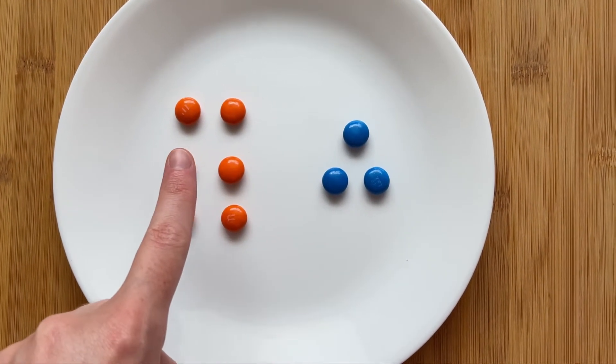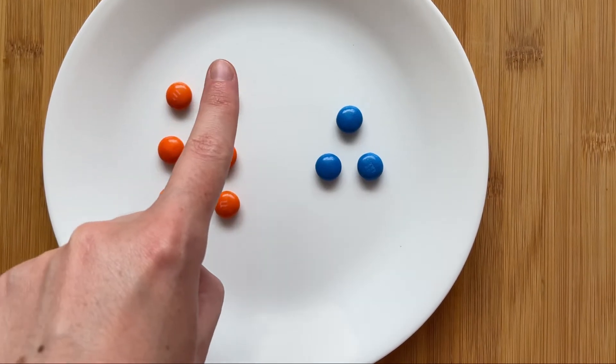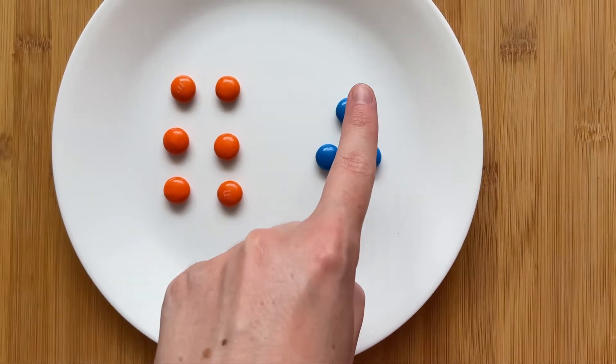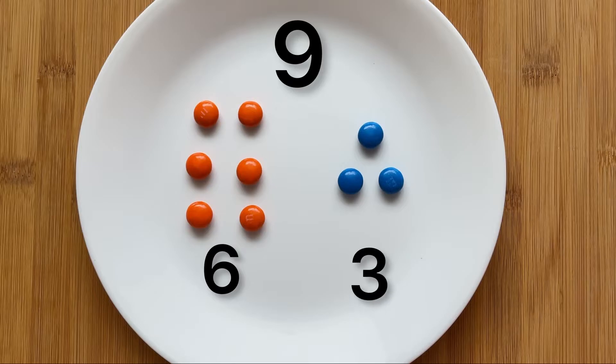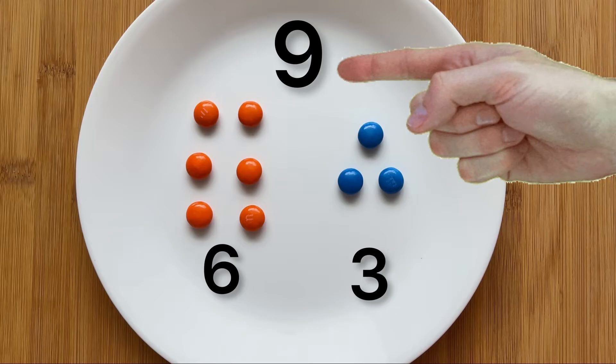One, two, three, four, five, six, seven, eight, nine. So all together we have nine M&Ms. That means that six orange M&Ms plus three blue M&Ms add together to make nine M&Ms in total.